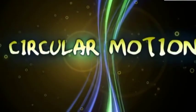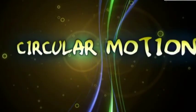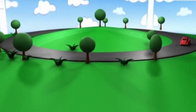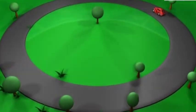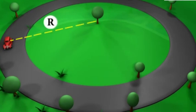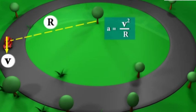Circular motion. Acceleration of a body moving in a circle of radius R with uniform speed V is V squared upon R, directed towards the center.